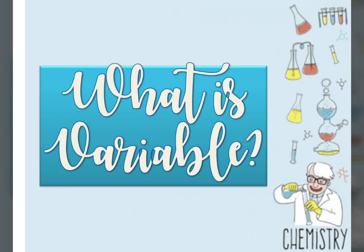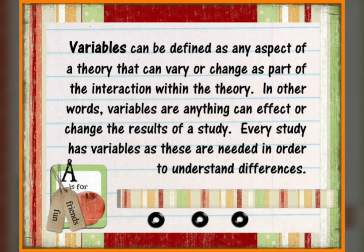But before that, let us first define variable. Variables can be defined as any aspect of a theory that can vary or change as part of the interaction within the theory. In other words, variables are anything that can affect or change the results of a study. Every study has variables, as these are needed in order to understand differences.